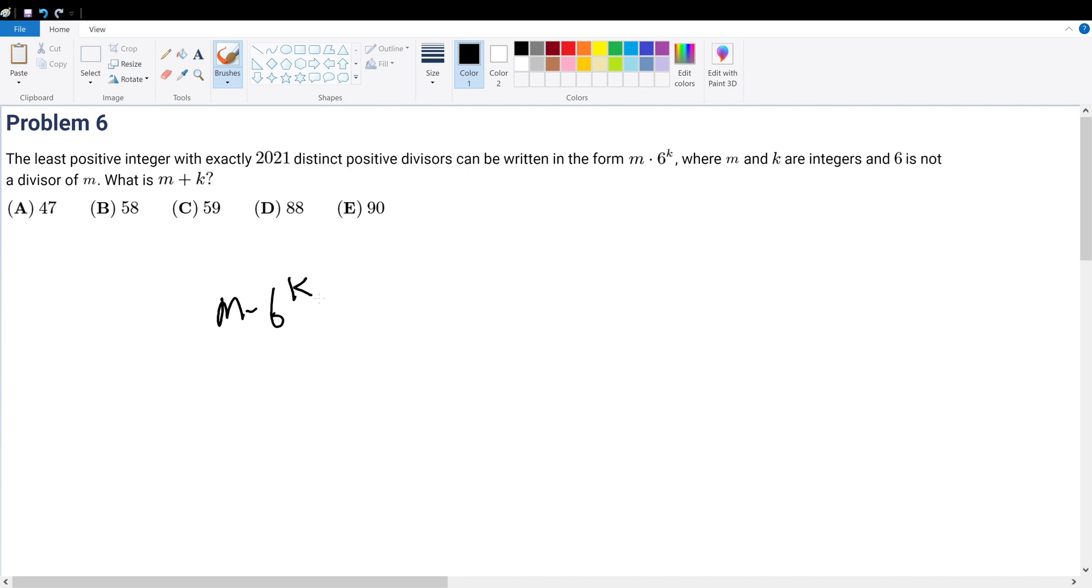m times 6 to the k, where we're trying to find divisors. How do you find divisors? Number theory basically tells us that if I have some integer a that can be written as prime 1 to the n power times prime 2 to the m power and so on...